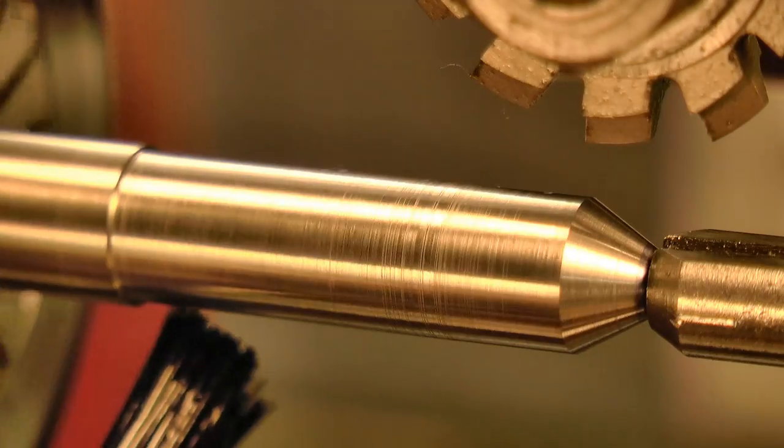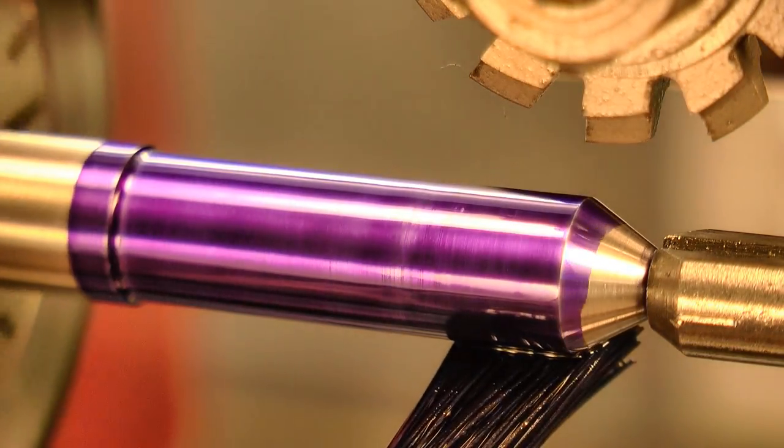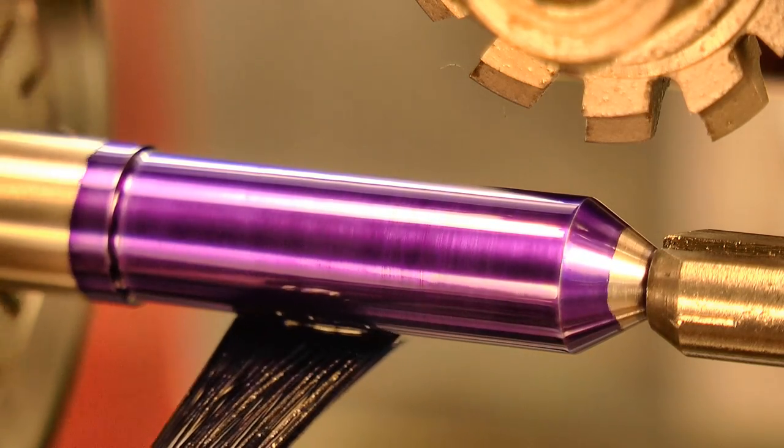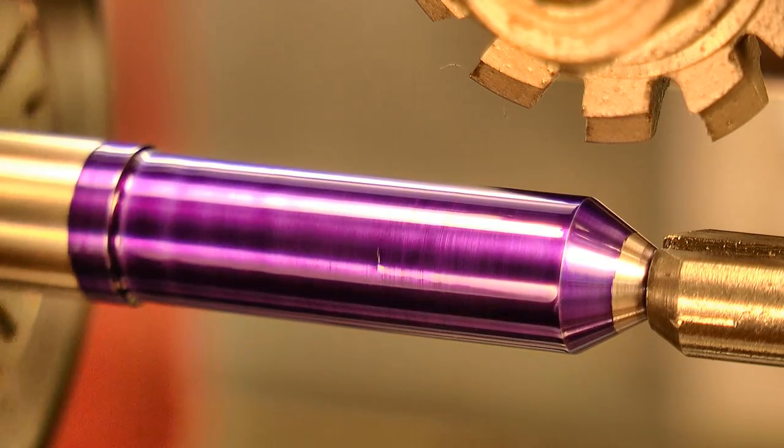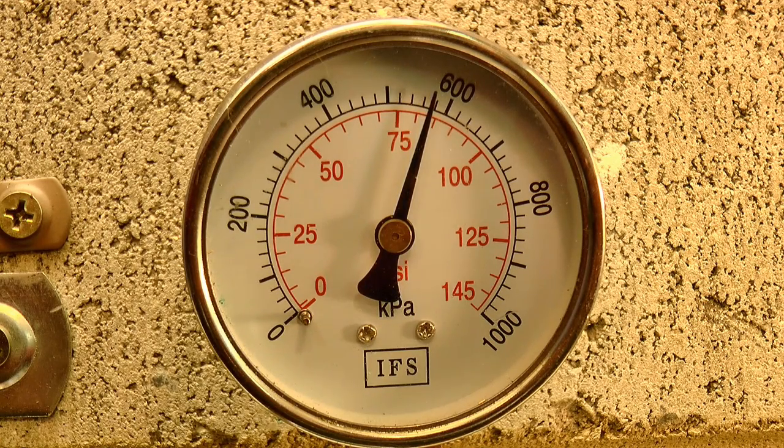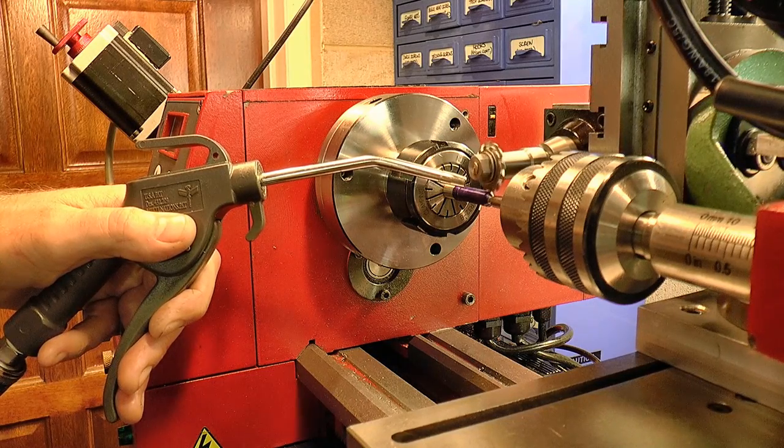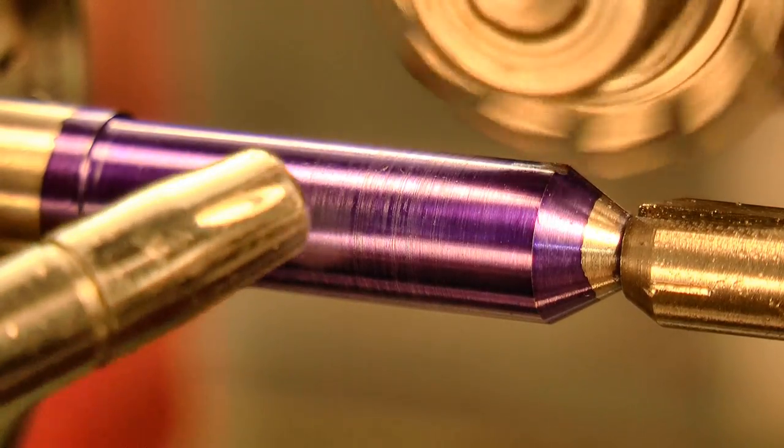It's also worth mentioning that cutting pinions is a lot more problematic than cutting wheels. Brass mills very easily. You can rip into it with the cutter, and providing it's all lined up as it should be, it's hard to get a bad result. But pinion cutting is something else altogether. For one thing, silver steel is much less forgiving, and really hard on the cutters.